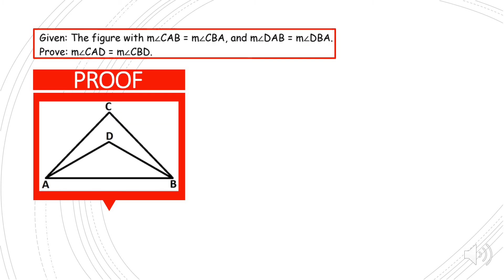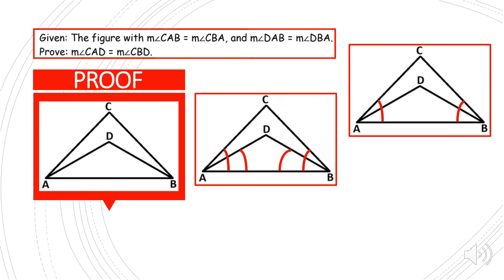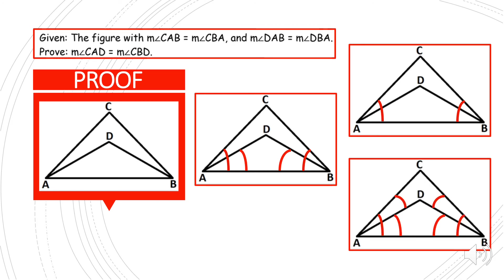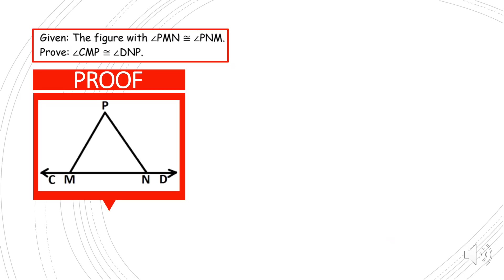Problem number four. The figure with measure of angle CAB is equal to measure of angle CBA, and measure of angle DAB is equal to the measure of angle DBA. Prove that the measure of angle CAD is equal to the measure of angle CBD. So we were given that these two angles are congruent, we were also given that these two angles are congruent, and we need to prove that these two angles are congruent. Statement number one: measure of angle CAB is equal to the measure of angle CBA, given.